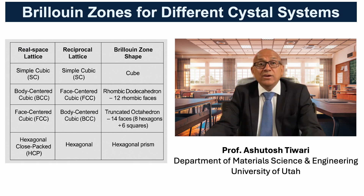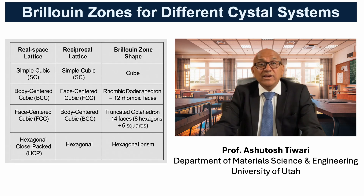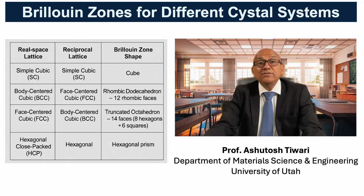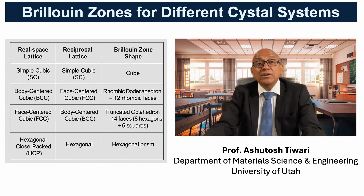For a body-centered cubic, or BCC, real lattice, the reciprocal lattice becomes face-centered cubic, whose Brillouin zone is a truncated octahedron, composed of 14 faces — 8 regular hexagons and 6 squares. Finally, for hexagonal close-packed, the reciprocal lattice is also hexagonal, giving a hexagonal prism Brillouin zone.